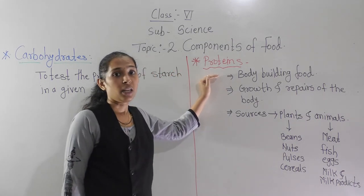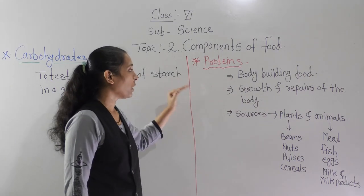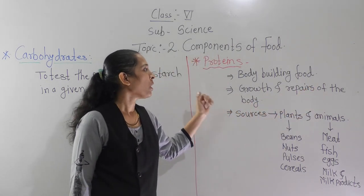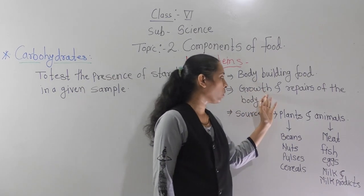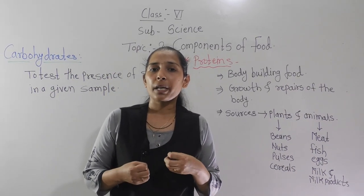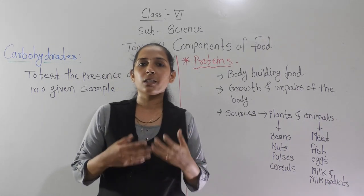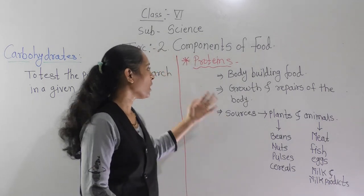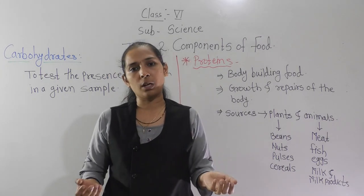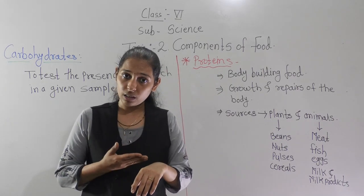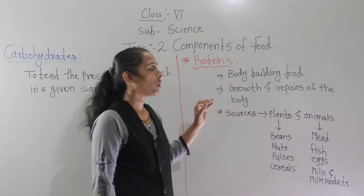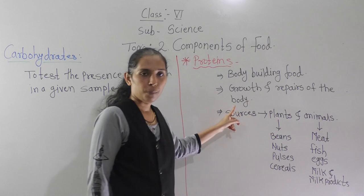Why do we need protein in our diet? Protein is necessary for the proper growth and repair of the body. Sometimes cuts happen on our body or the body gets damaged. With the help of protein, these cuts and wounds get healed and after some time we regain normal skin. So protein is necessary for growth and repair of the body.